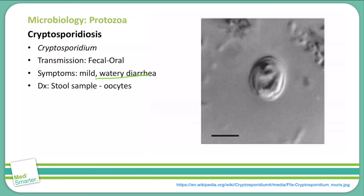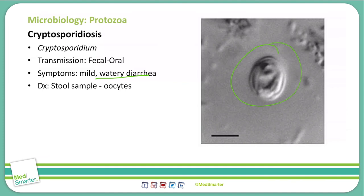You will see oocysts in the stool on an acid-fast stain, so we do a stool sample to diagnose and look for those oocysts, as you can see here. To remove this contamination from water, you can boil the water. Of note, cryptosporidiosis is the most common cause of diarrhea in AIDS patients.